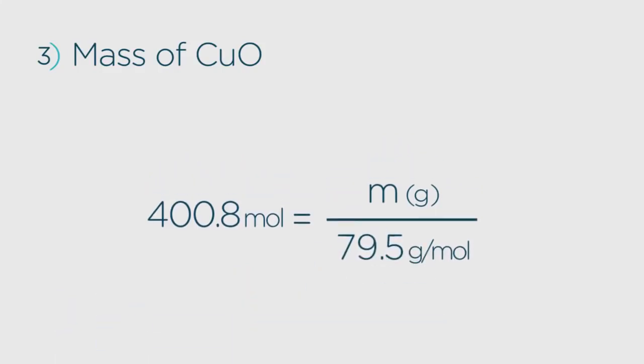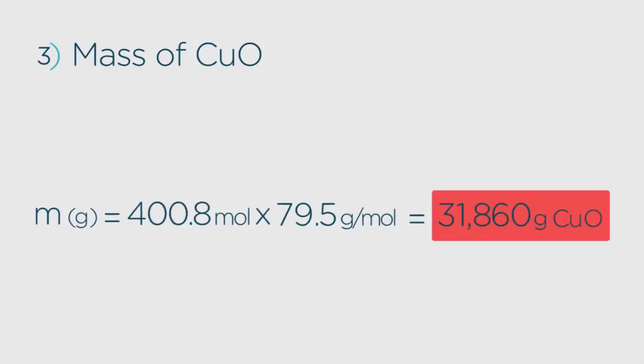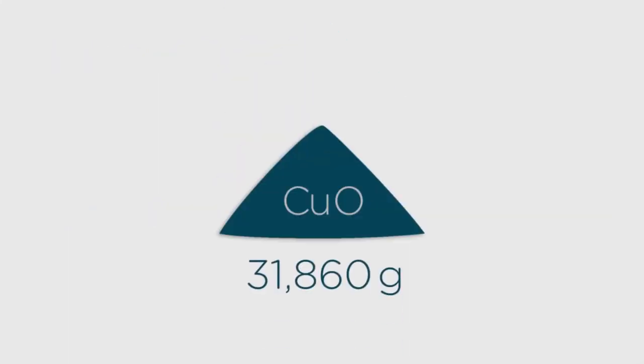To find the mass, only a simple rearrangement is needed. 400.8 times 79.5 equals 31,860 grams of copper oxide. And there you have it, we've solved the problem.